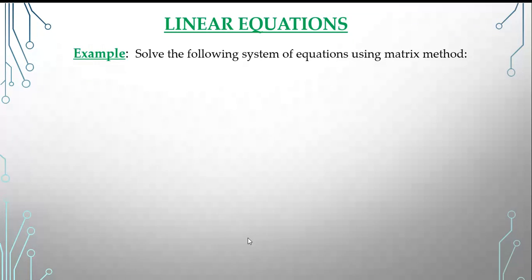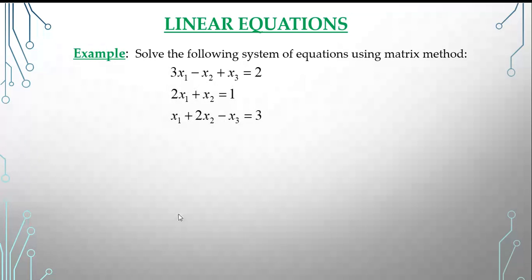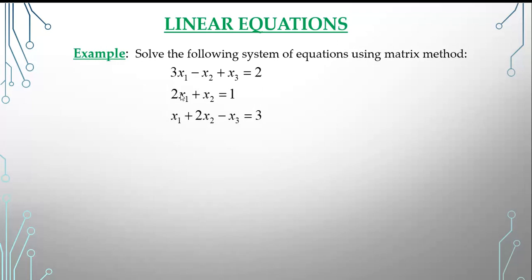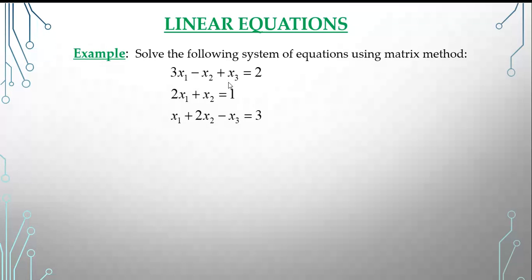Now let's take an example. We need to find the solution of this system of equations by the matrix method — that is, the inverse method. The system is: 3x1 − x2 + x3 = 2; 2x1 + x2 = 1; x1 + 2x2 − x3 = 3. The variables we want to find are x1, x2, and x3.